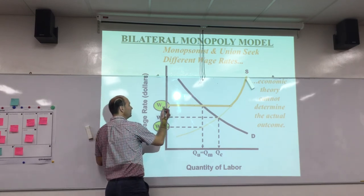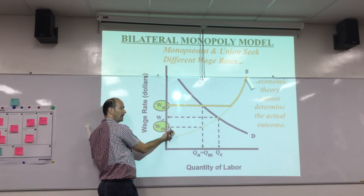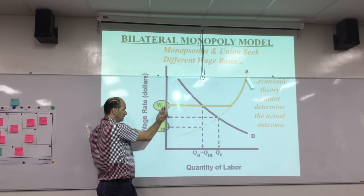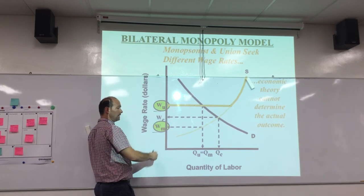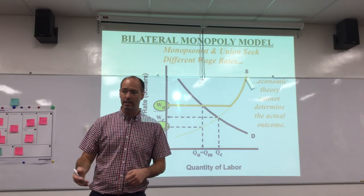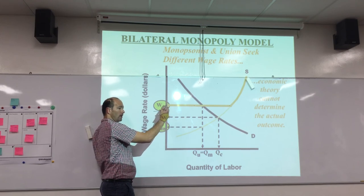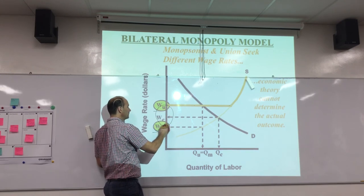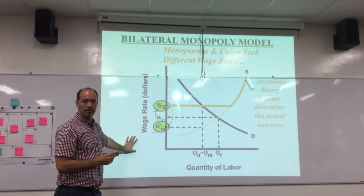What should happen is the union will demand the wage at W sub U, like in the inclusive model, while the monopsonist wants to pay W sub M — the monopsony wage. Then they negotiate. The union threatens to strike if the employer insists on the low wage; the employer offers a bit more but not the full union wage. Where you have both monopsony power and union power, the wage that's negotiated should fall somewhere between W sub M and W sub U, but we don't know precisely where.